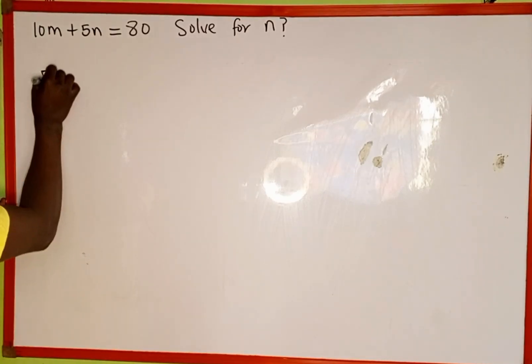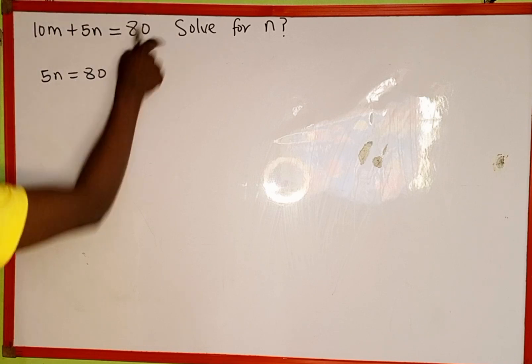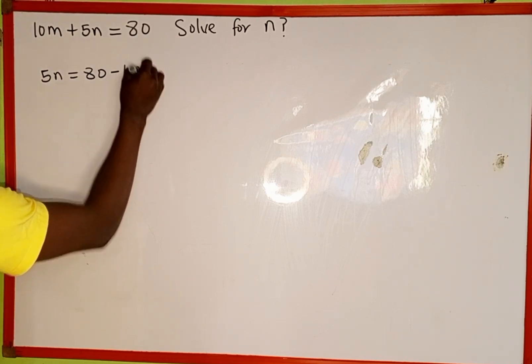We're going to have 5n which is equal to 80. And when this positive 10m crosses to the other side, it's going to be negative 10m.